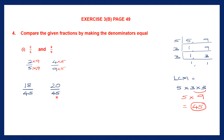Now when the denominators are the same, the greater numerator is the greater fraction. Looking at the numerators 18 and 20 — 20 is greater. So 20 by 45 is the greater fraction. Since 20 by 45 is 4 by 9 and 18 by 45 is 2 by 5, going back to the original question: 4 by 9 is greater than 2 by 5. Find the LCM of the denominators, get the new numerators, and compare.